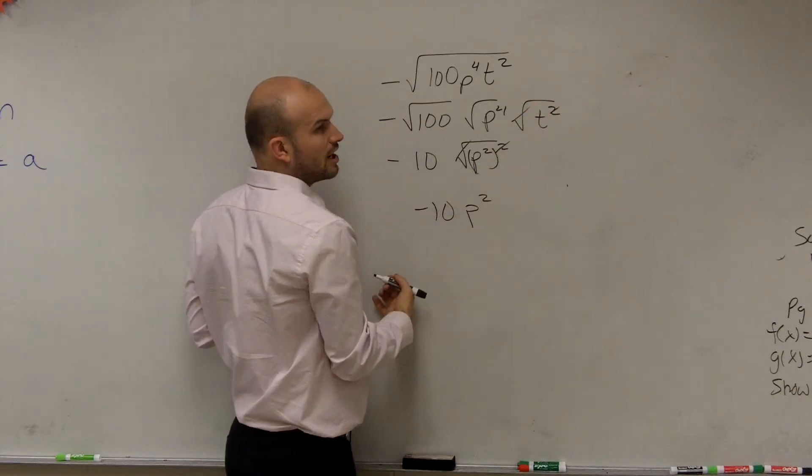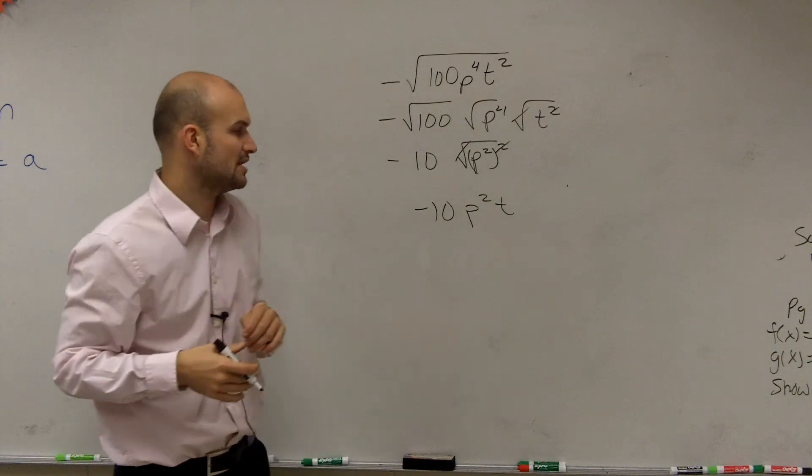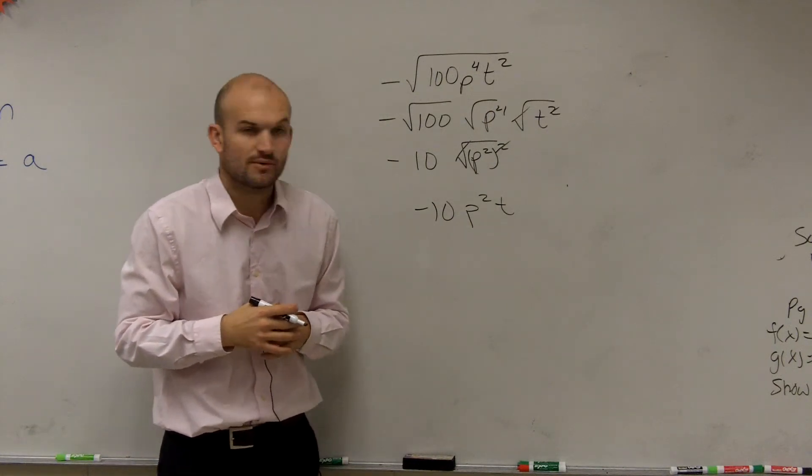Here, my square roots are going to undo each other, so I'm just left with t. So my final answer is negative 10 p squared t. Bye.